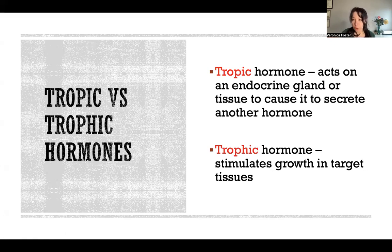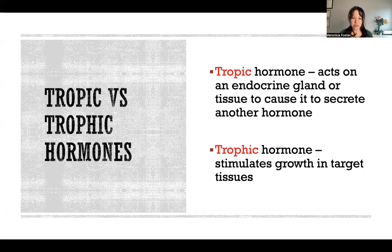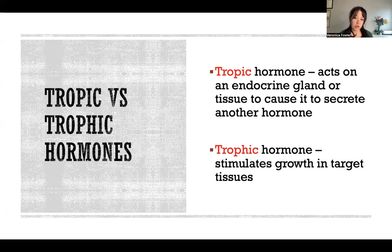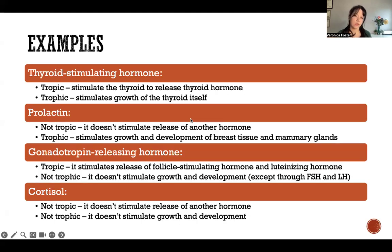A trophic hormone is any hormone that stimulates growth in the target tissues. These terms are very similar, but they mean two entirely different things. It's really confusing because in a lot of places you'll see these terms used interchangeably to describe the same hormones, but that doesn't mean they mean the same thing. It just means that some hormones are both tropic and trophic. A hormone can be tropic, trophic, both, or neither. I'm going to give you an example of each of those scenarios.